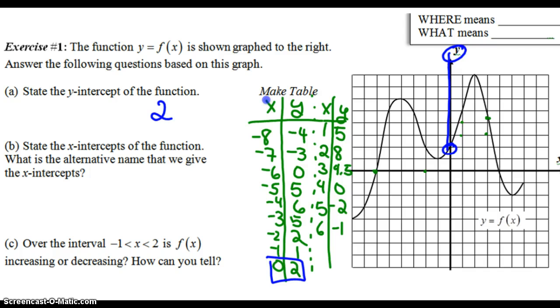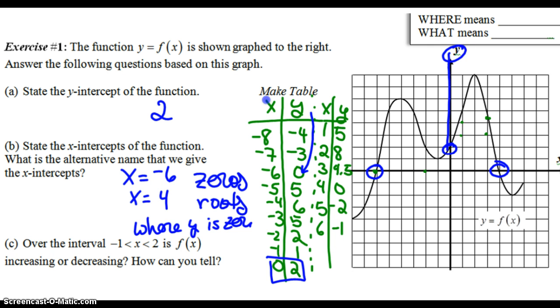Next, state the x-intercepts of the function. What is an alternative name we give the x-intercepts? So starting with, where does the thing hit 0? It hits 0 right way over here at negative 6 and over here. So we would say the x-intercepts are negative 6 and positive 4. And since it was where it hit 0, the y-value being 0, we also call these zeros. You'll hear them be called roots. If you're looking at the table version, you're now looking where the y-value was 0.